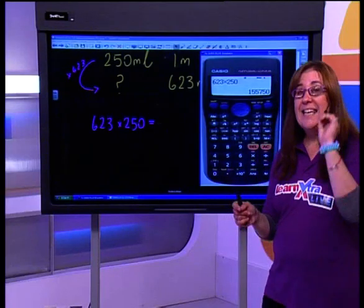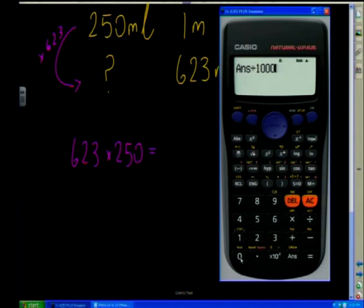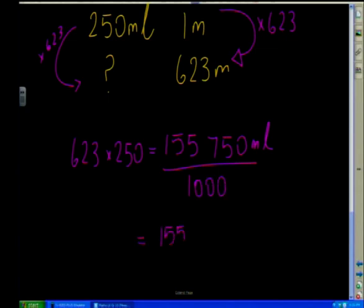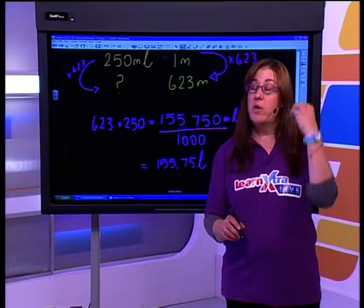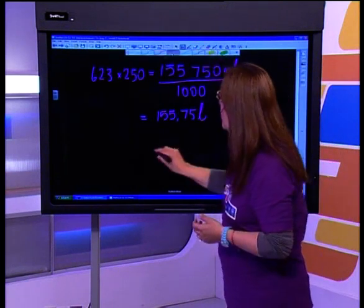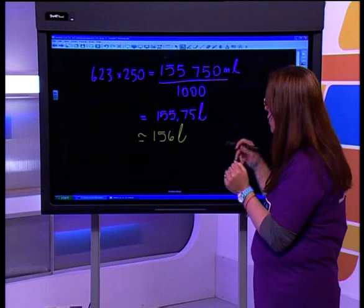I need my answer in liters, so let's convert. We're going to divide by 1,000 — because there are 1,000 milliliters in a liter. My answer is 155.75 liters. Now the question asks how many liters we need. I'm not going to the shop and asking for three quarters of a liter, so I need to round this off to a whole number. I'm going to round up to 156 liters. We always round up in this situation because we don't want any part of the field not painted — we'd rather have extra paint.